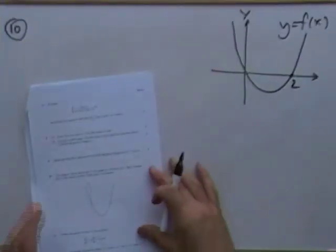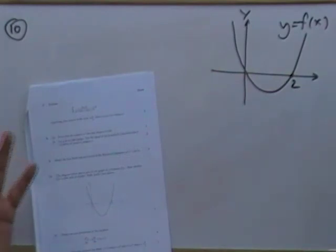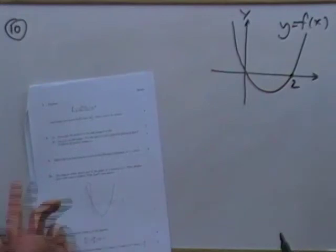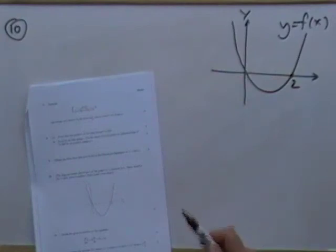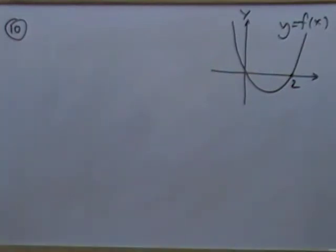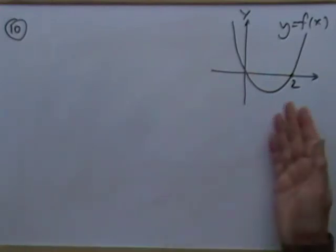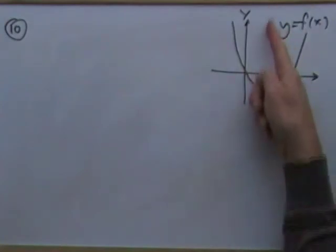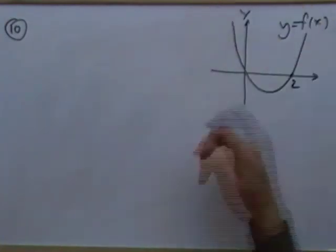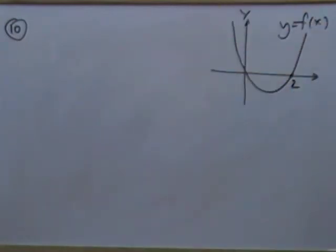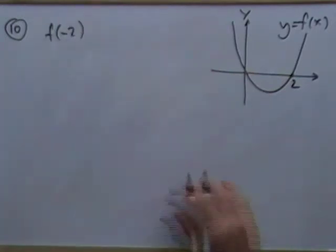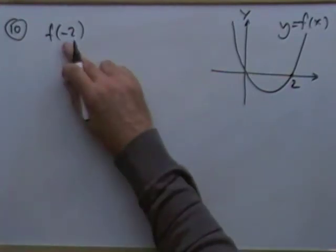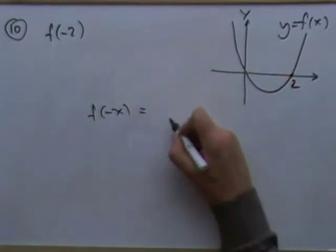Number ten: for three marks you've got this function and it asks whether it's odd, even or neither. It's obviously not symmetrical about the y-axis and not point-symmetrical about the origin — those are the two conditions — but let's just state them formally. It might be symmetrical about x = 1 but that doesn't count.